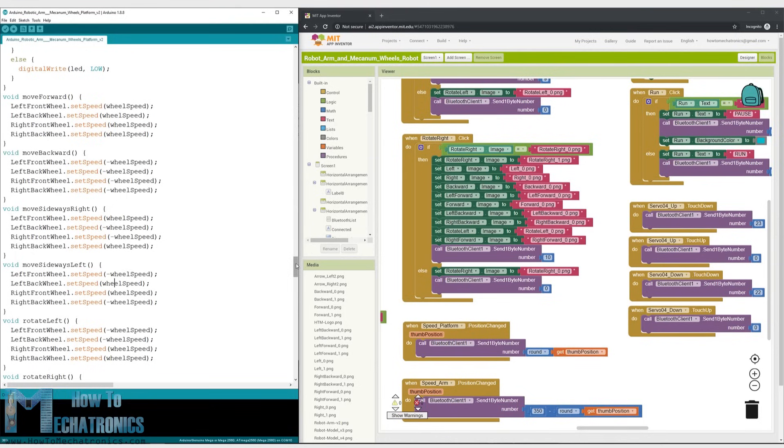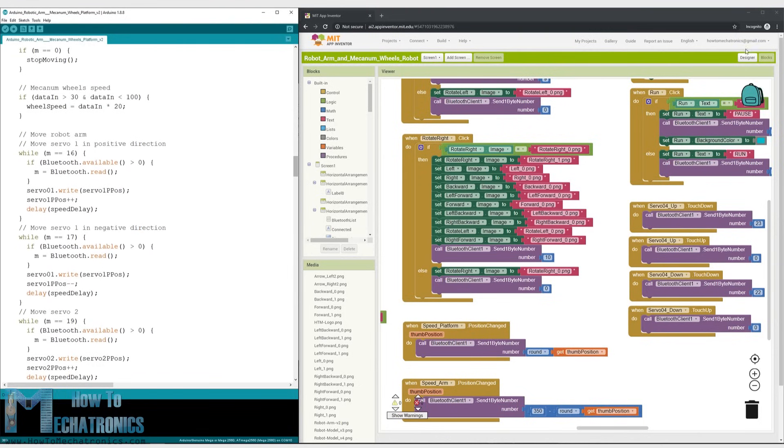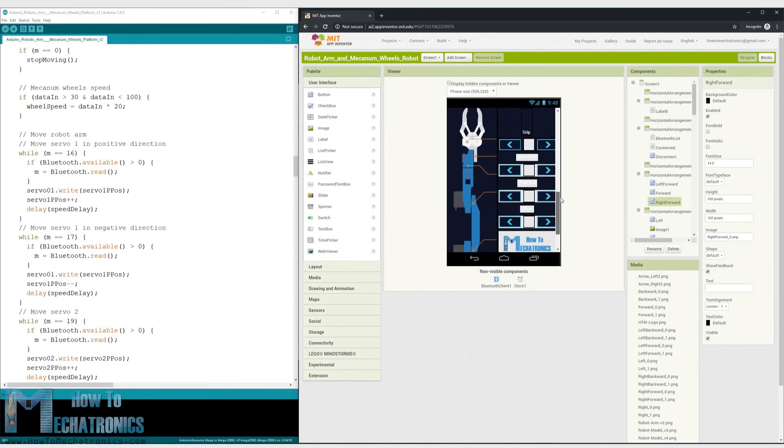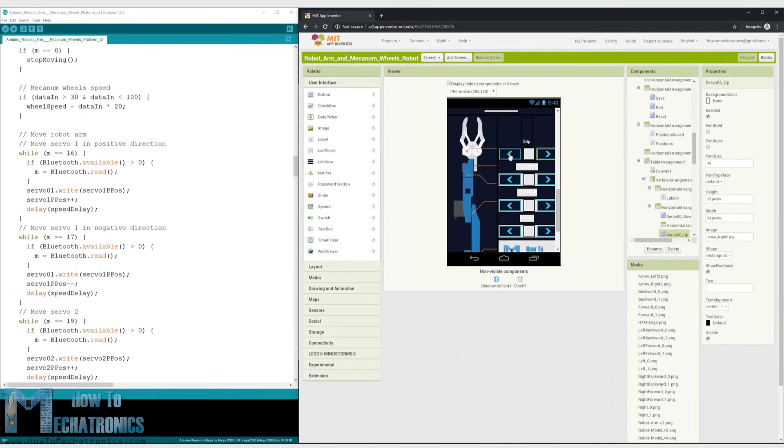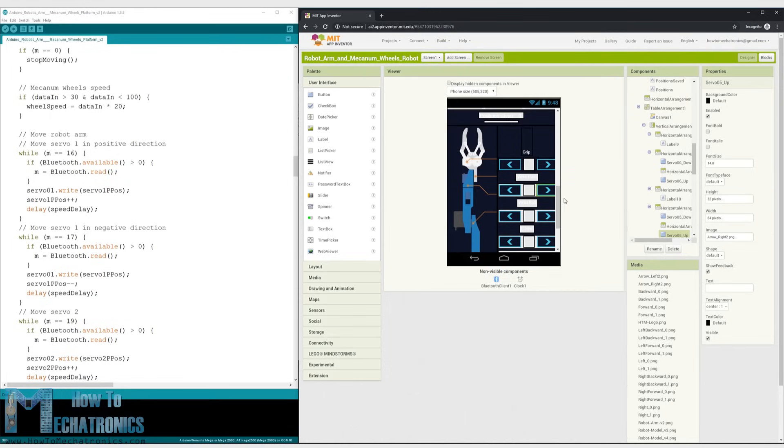For controlling the robot arm we use the same method. Again we have buttons in the app and when holding the buttons, the robot arm joints move in the particular direction. As I mentioned earlier, in the original robot arm control app we were using sliders for controlling the positions of the servos. But that was causing some problems, because in that way we had to send text to the Arduino, instead of one byte number.